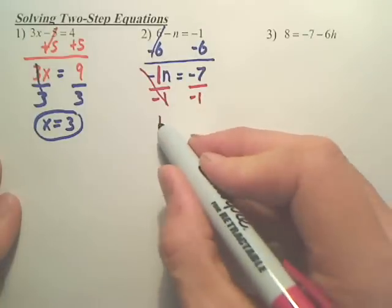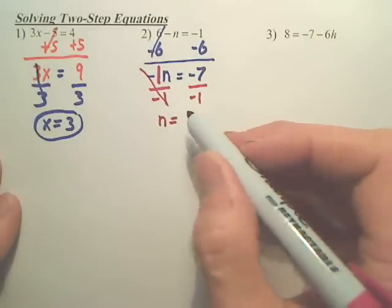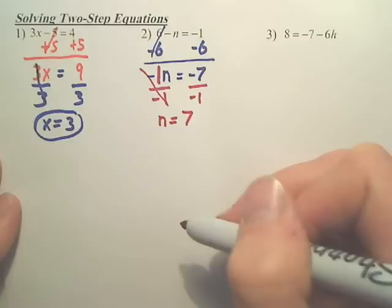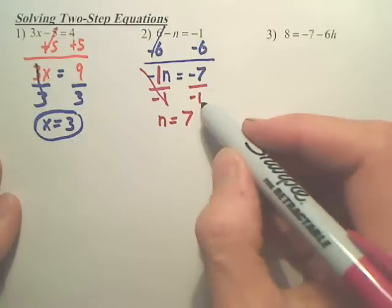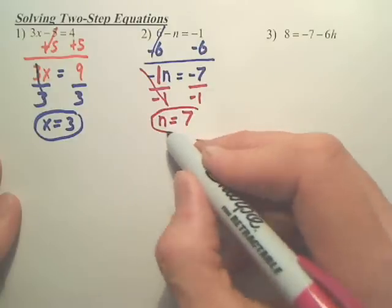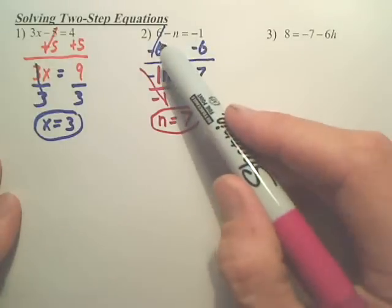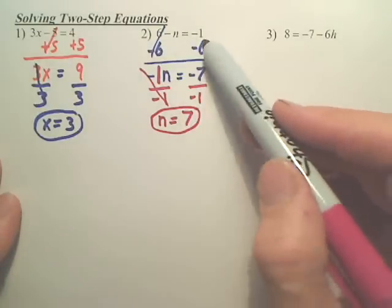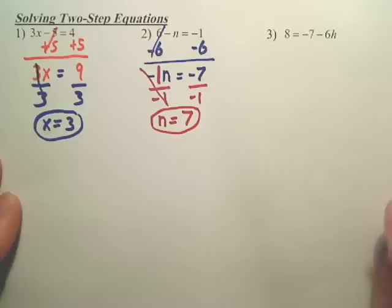That's done. n equals 7. Because a negative 7 divided by negative 1 is positive 7. If you plug that back in, does 6 minus 7 give you negative 1? Yes.